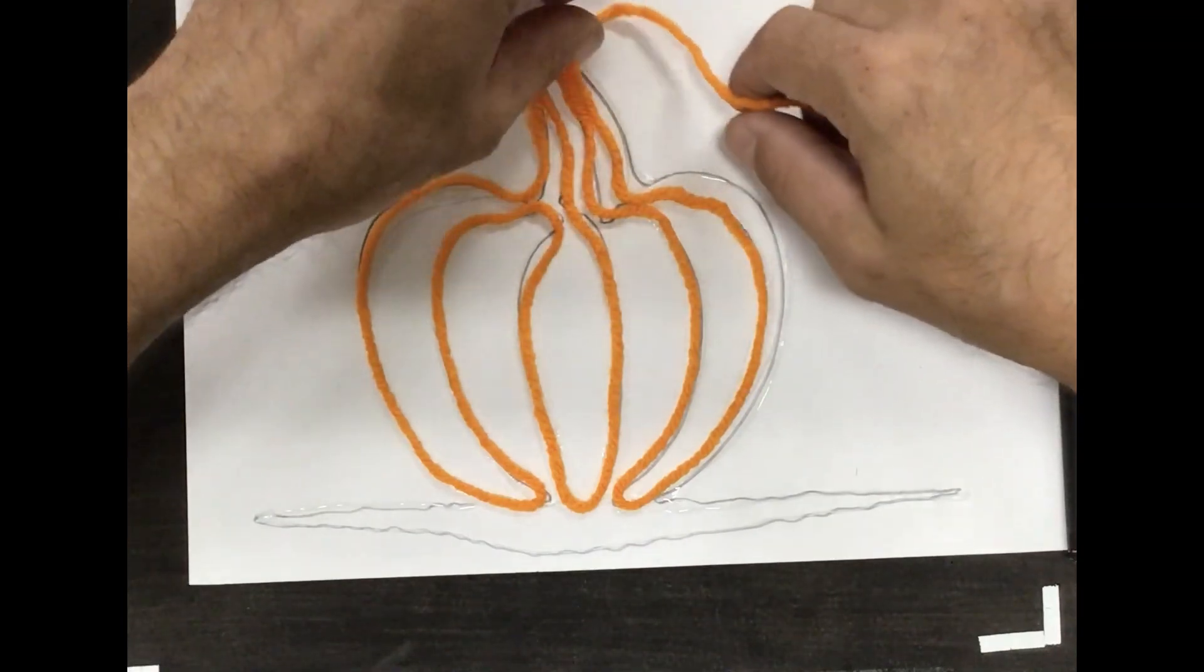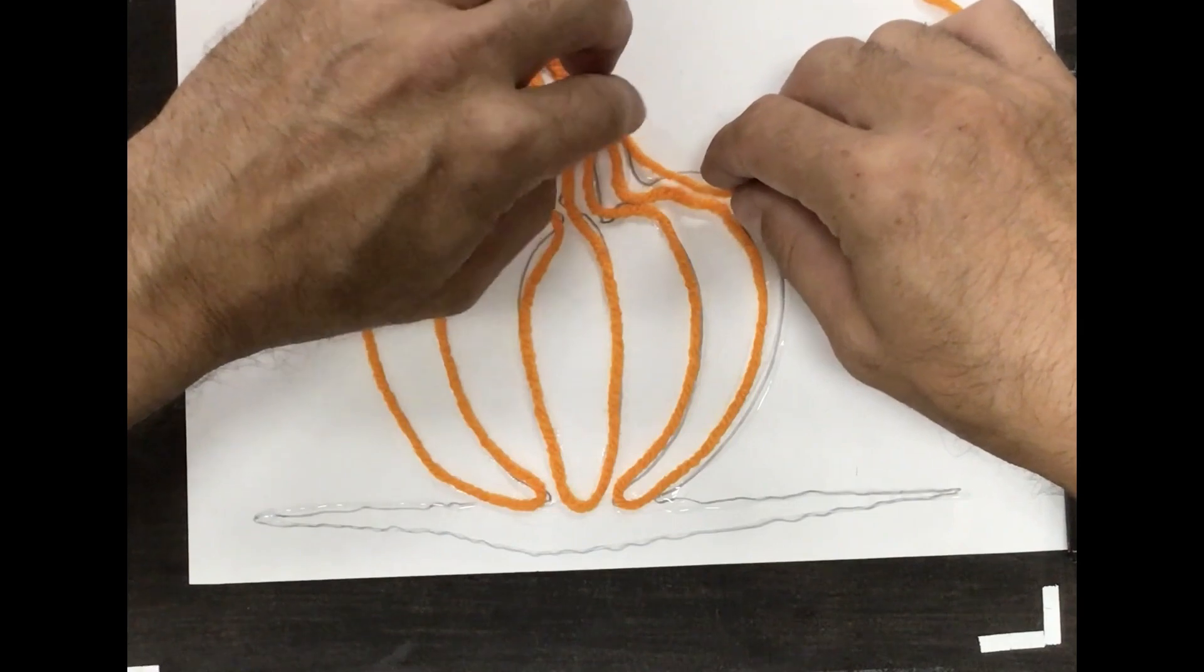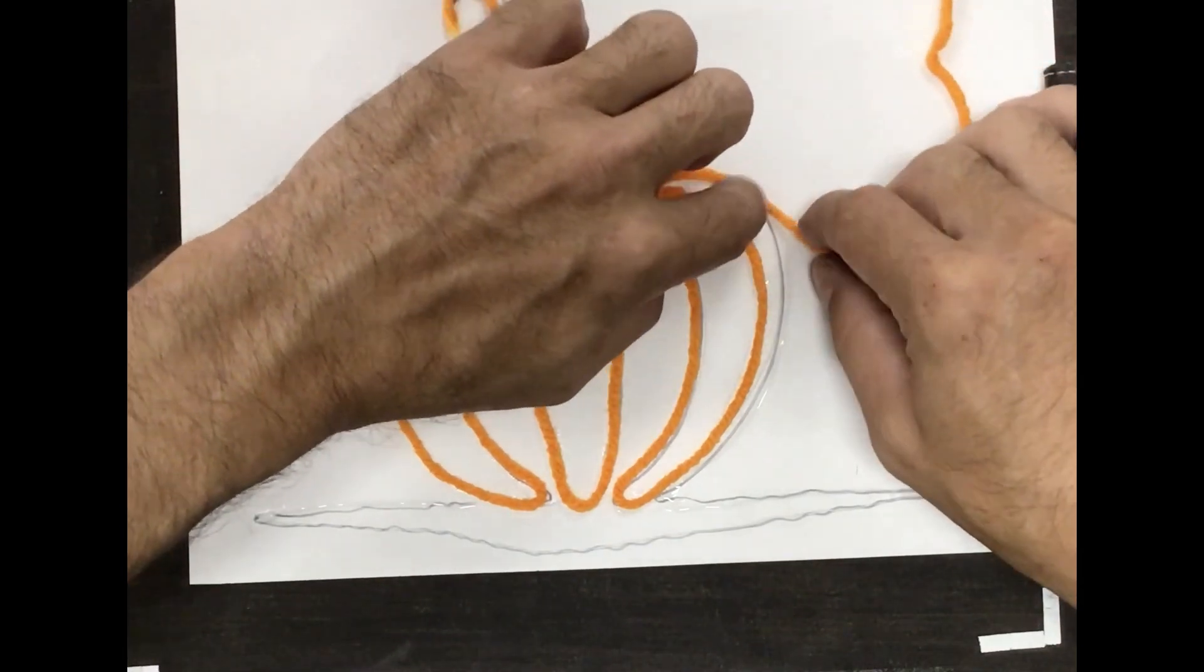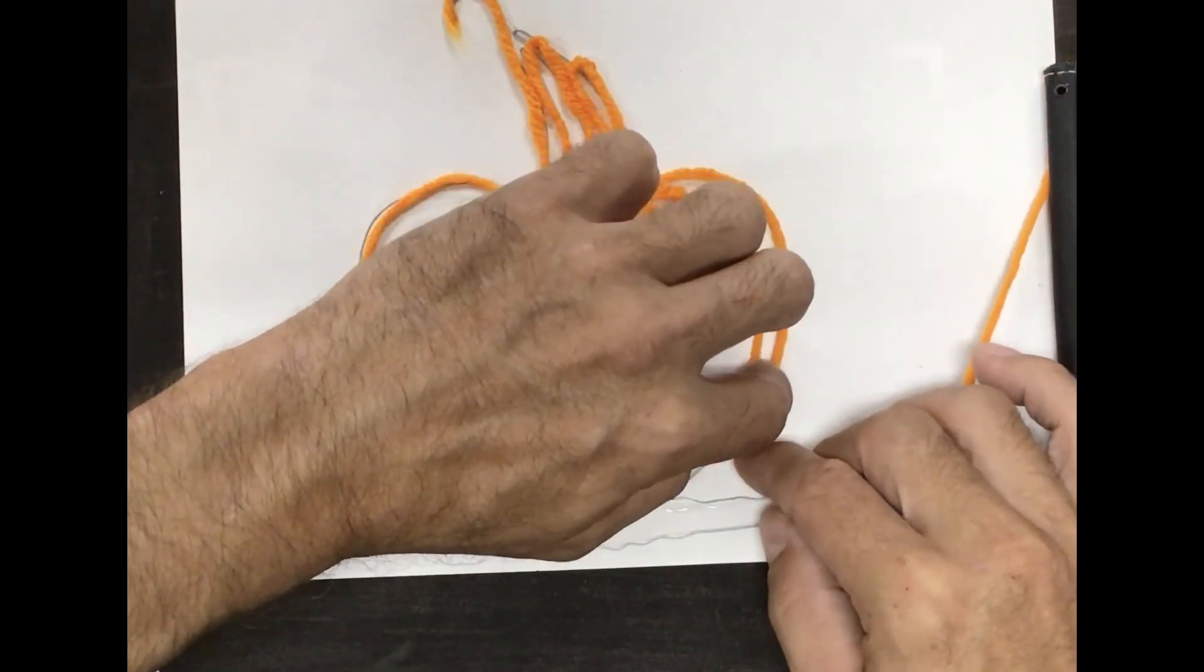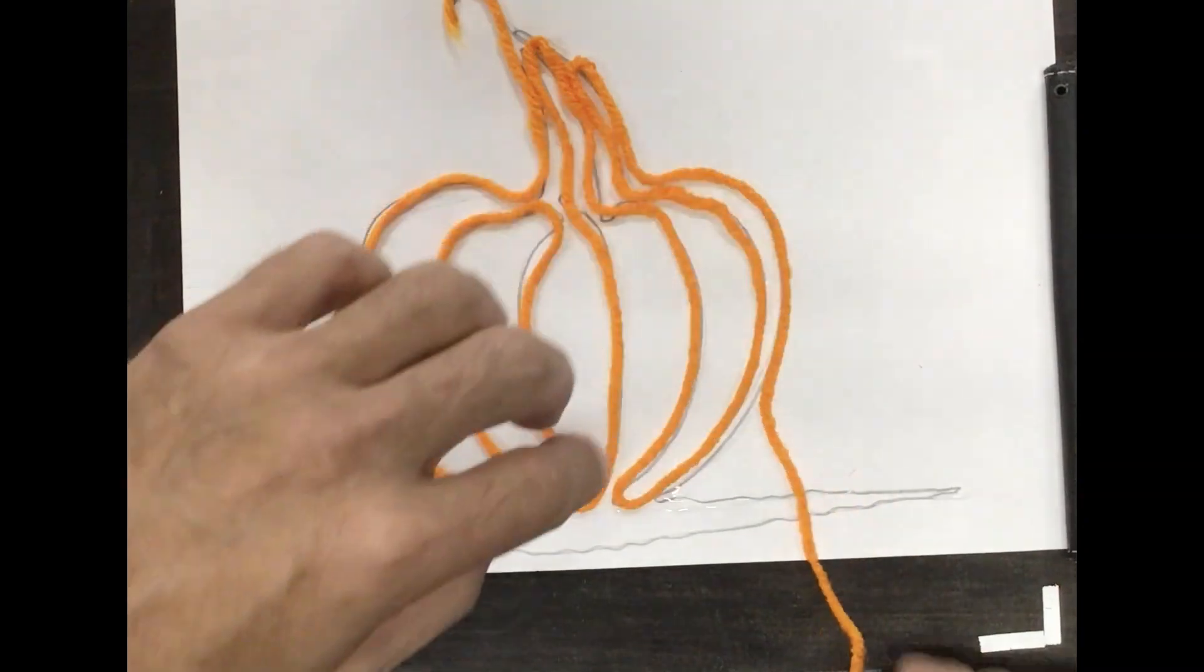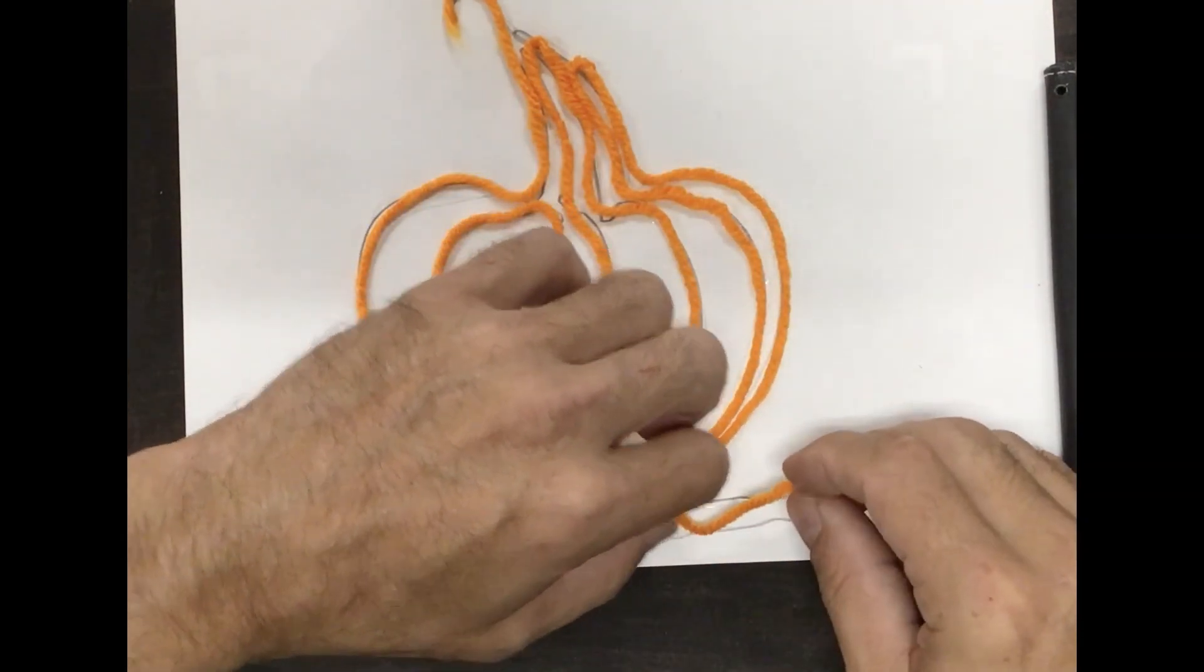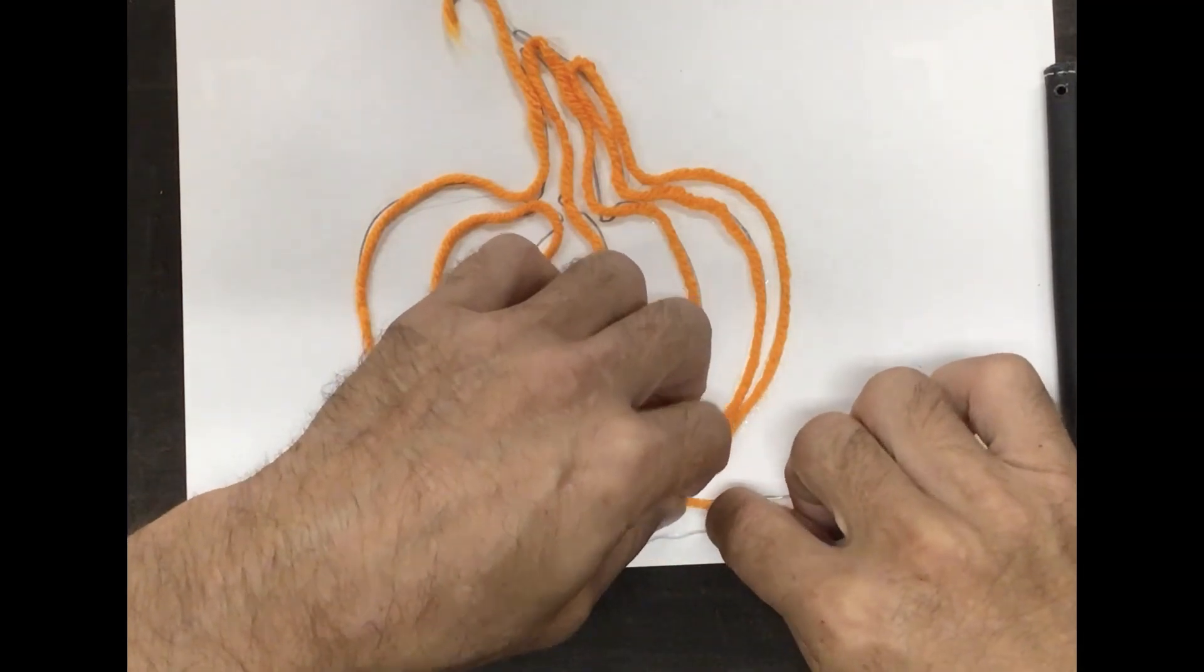You want to be able to see the abstract quality. You don't want to make it too realistic. A lot of times that's tempting to do, to go over the same line and hide the line. It'd be almost impossible to hide the line with yarn.